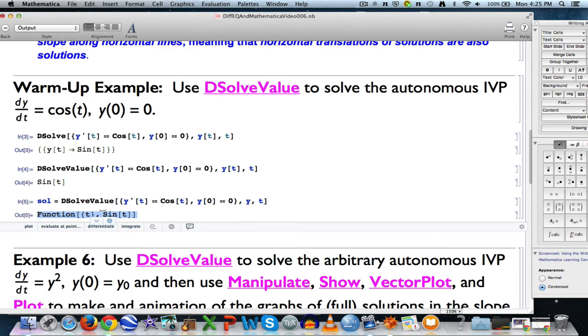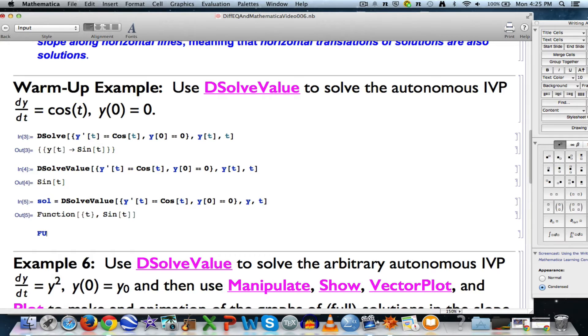That's called a pure function in Mathematica. And in a nutshell, to keep it as simple as possible, a pure function is just a way of representing a function, in this case the sine function, that you can use without giving the function a name, like f, or g, or h. Now you might be saying, is that really such a big deal? Should I use pure functions? Well, yes, in some cases they are useful.